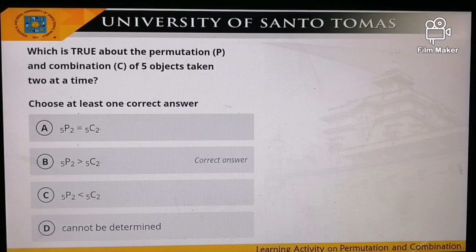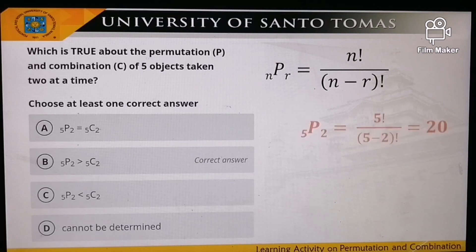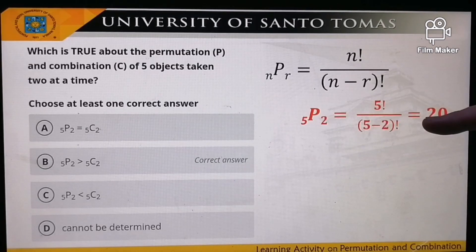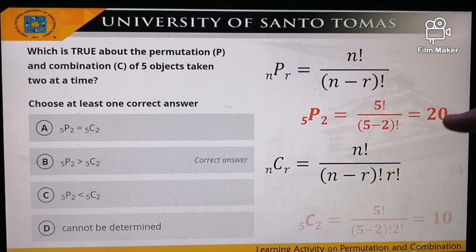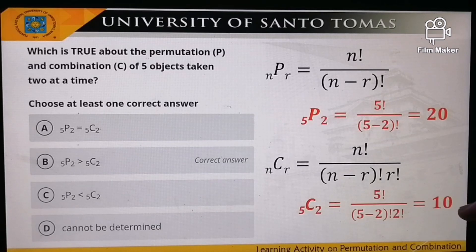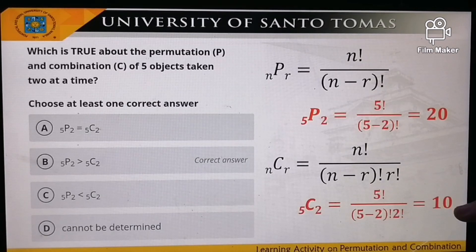Next problem: which is true about permutation and combination of five objects taken two at a time? Solving permutation: P(5,2) = 5! / (5−2)! = 20. For combination: C(5,2) = 5! / [(5−2)! · 2!] = 10. Comparing the two, 20 and 10, permutation is greater than combination. Therefore the correct answer is B.